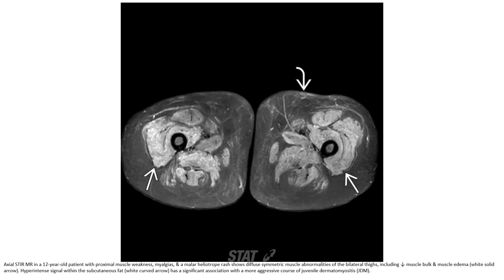This is MRI in a 12-year-old patient with proximal muscle weakness, myalgia, and heliotrope rash. The image shows symmetric muscle abnormality of the bilateral thighs including decreased muscle blood flow and muscle edema. Hyperintense signal within the subcutaneous fat has a significant association with a more aggressive course of juvenile dermatomyositis.